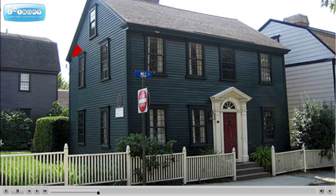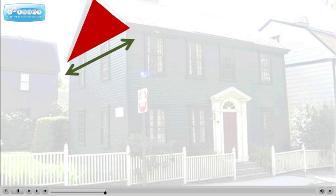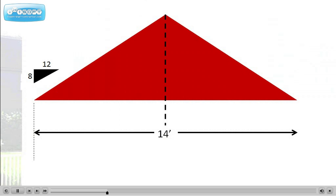When I apply this to a project, I'll measure the width of the building and then identify the slope of the roof. In our example, let's say the roof slope is 8 and 12. The span of the gable is 14 feet.